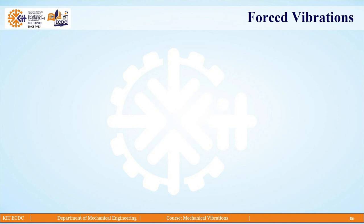Now, as we have seen for forced vibrations, there is a homogeneous solution and there is a particular solution, and this gives you the total solution. The homogeneous solution we have seen from the last lecture is a case of an underdamped system, and it is going to have transient vibrations whose amplitudes decay and die out after some amount of time. We are much more interested in the particular solution because this gives us xp, which gives us the steady state amplitude.